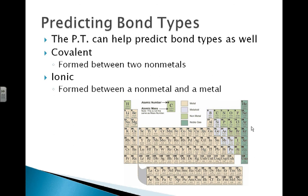So you can use your periodic table, keeping in mind where the metals and the non-metals are, and be able to figure out if a compound is covalently bonded or if it is an ionic bond.